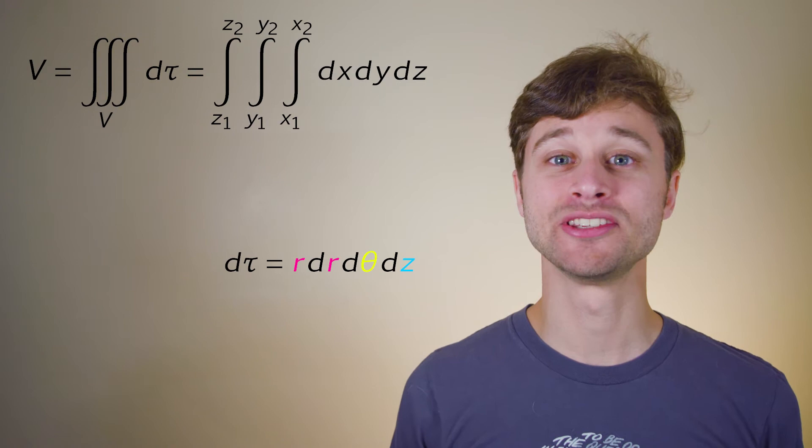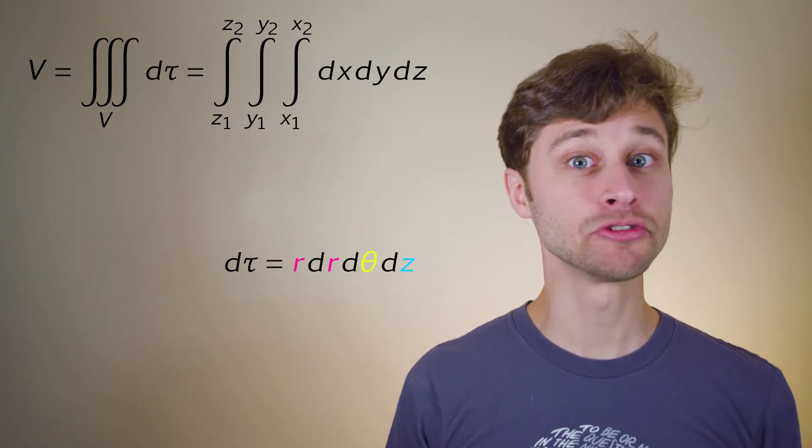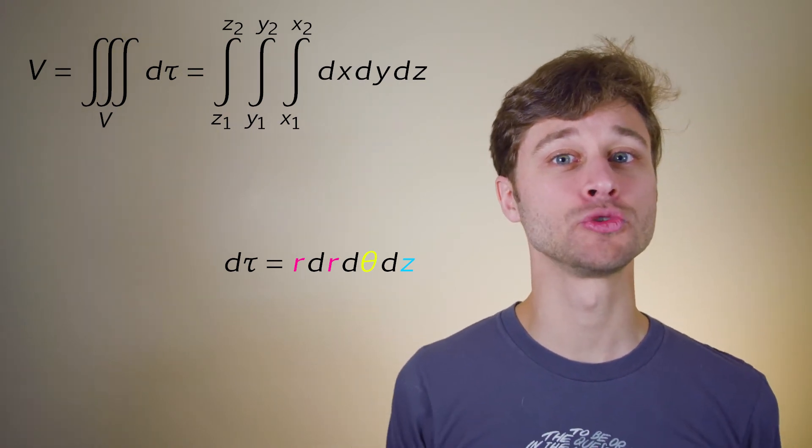Now, writing the volume is equal to the triple integral of d tau in cylindrical coordinates, we get that that is equivalent to the triple integral of r d theta dr dz. So we're ready to integrate, but we don't know what our limits of integration are. So let's go and figure those out.